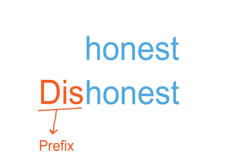What happens if I add something to the beginning of my word? This is called a prefix. I know that the prefix dis- means not. In other words, the word dishonest means not honest, or someone who lies.